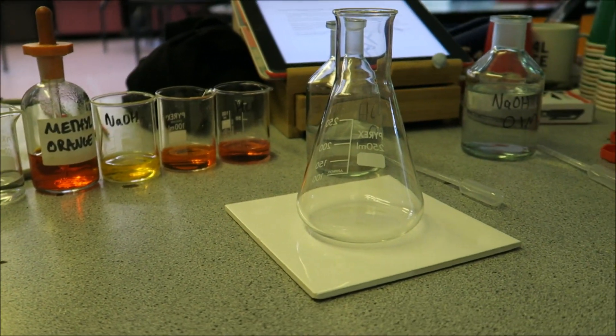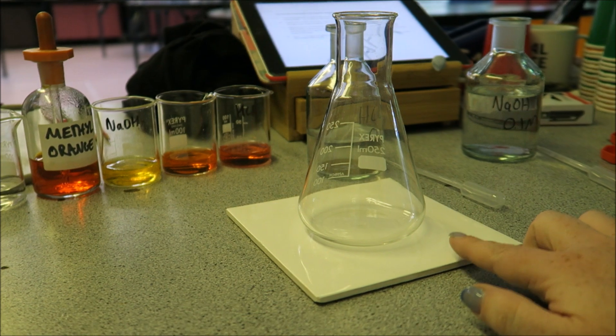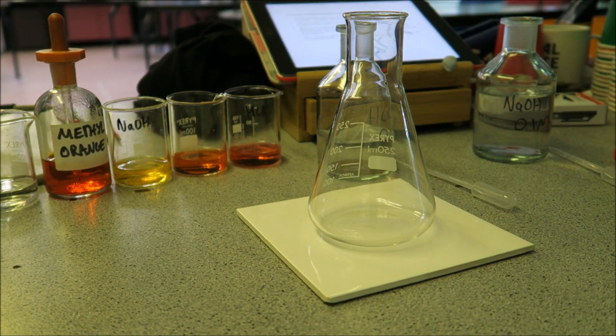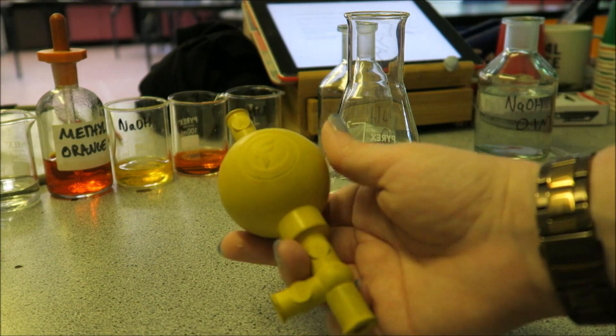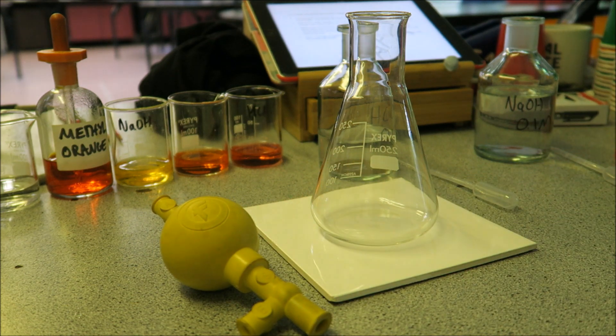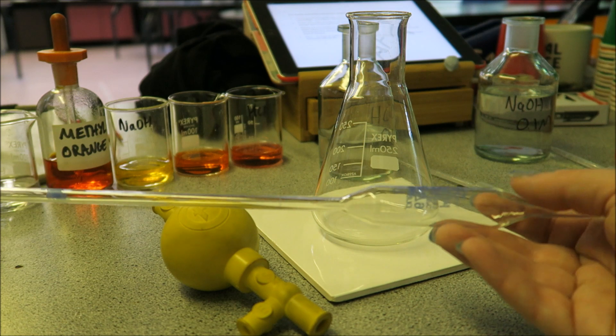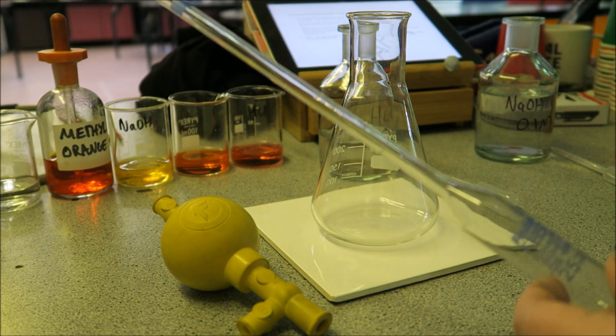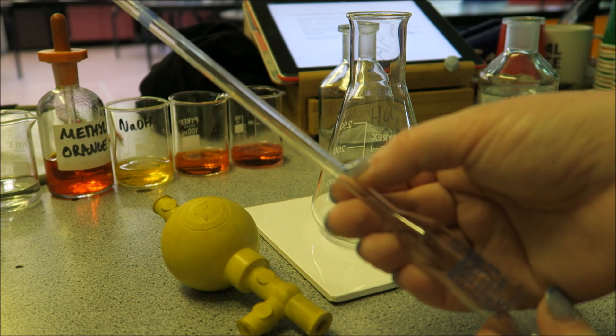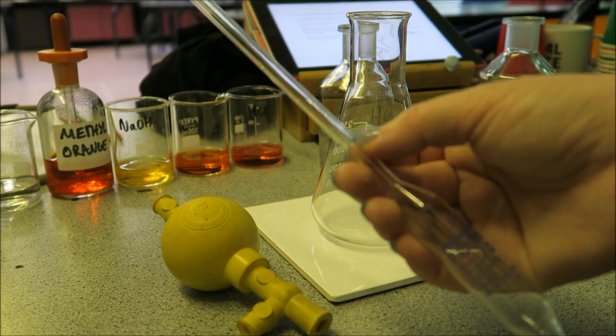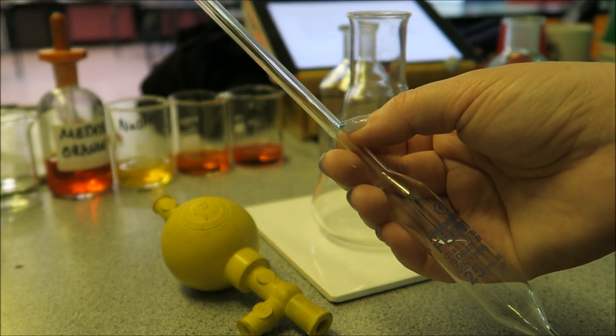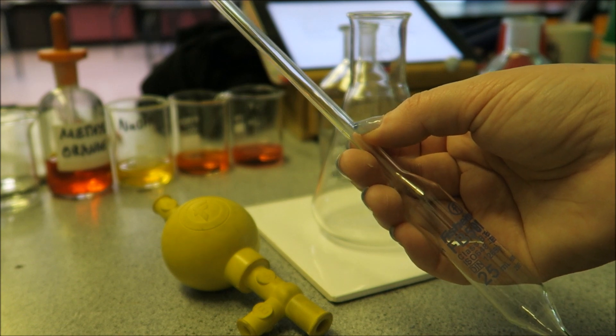The first thing I need to do is pop 25 cm cubed of hydrochloric acid in here. What we have available is a ball pipette and a long pipette that looks like this. You'll notice on your pipette there is a line just about here, and this is where we are aiming to fill the pipette to.